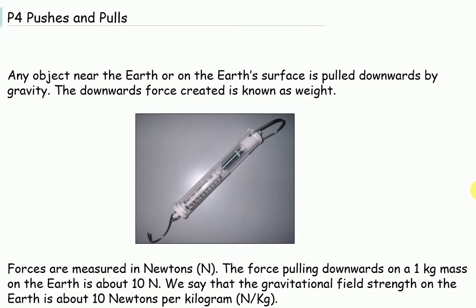Any object near the Earth or on the Earth's surface is pulled downwards by gravity. The downwards force created is known as weight. Forces are measured in newtons. The force pulling downwards on a 1kg mass on the Earth is about 10 newtons. We say that the gravitational field strength on the Earth is about 10 newtons per kilogram.